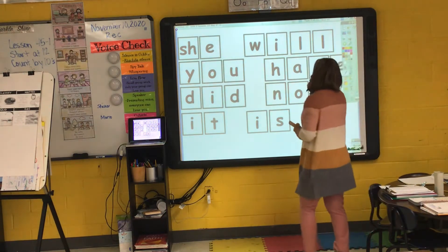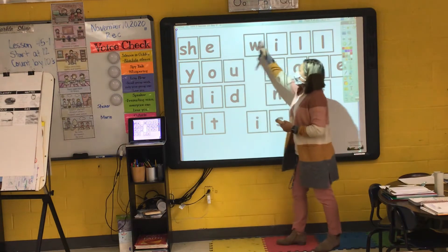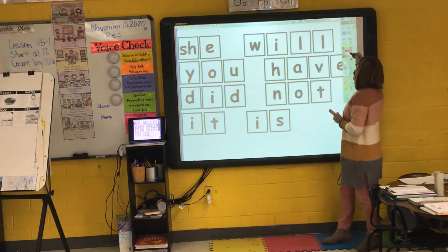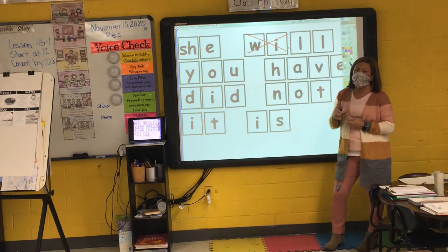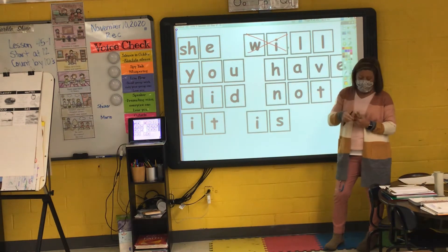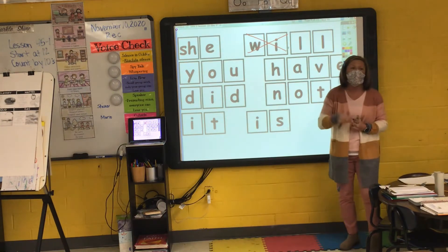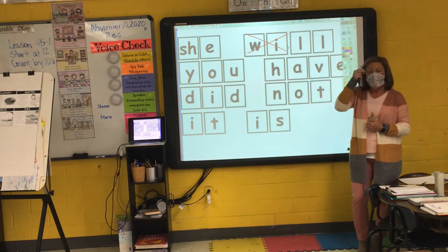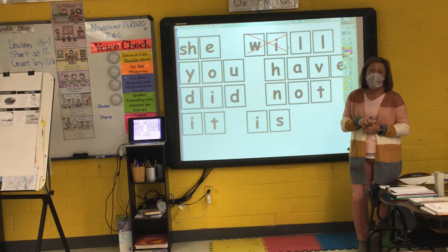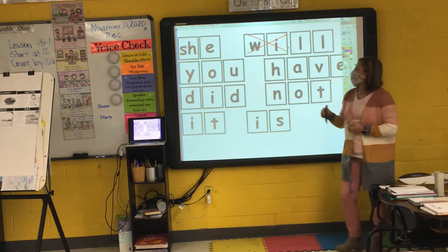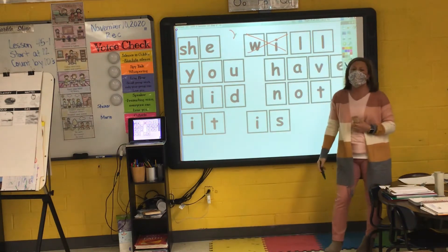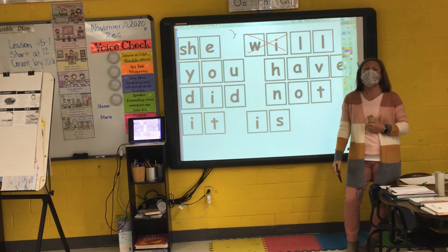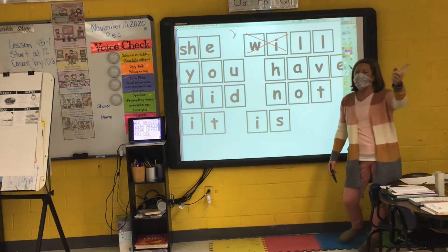I have the word 'she' and I have the word 'will.' I'm going to take out the W-I. What will I replace the W-I with? I will replace the W-I with an apostrophe and I will get the contraction 'she'll.' I say it, you say it: 'she'll.'